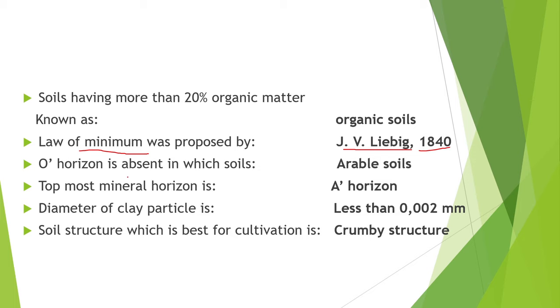Next point is, the O horizon is absent in arable soil — that is, soil in which we do cultivation and perform plowing and tillage operations. But the O horizon is present in virgin soil.